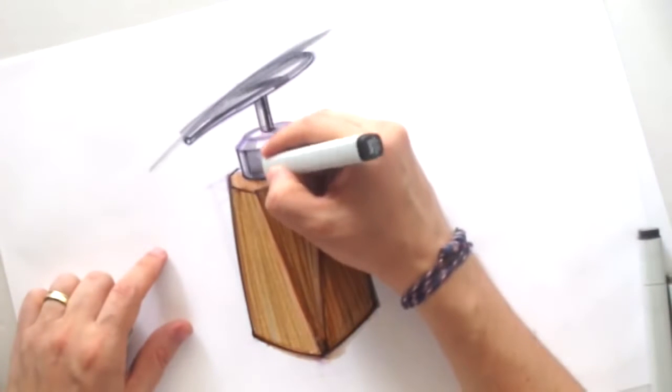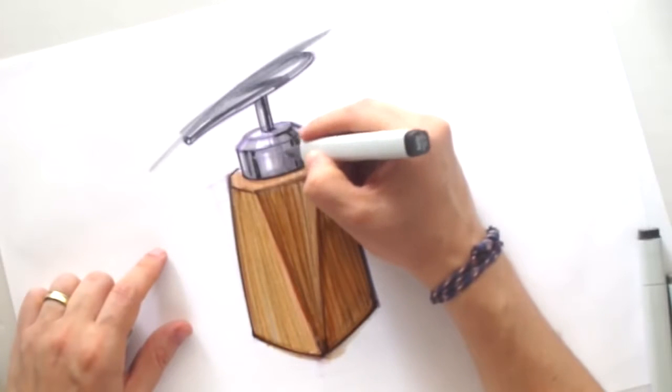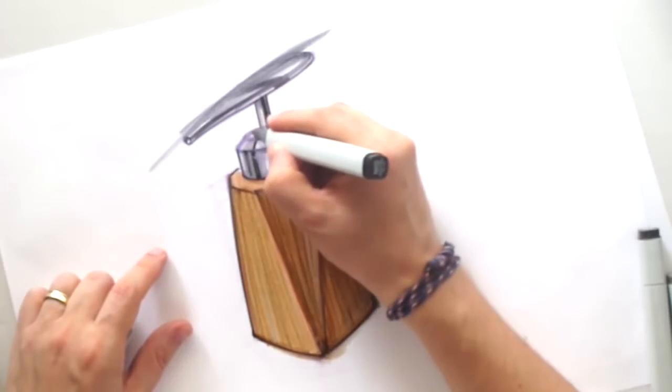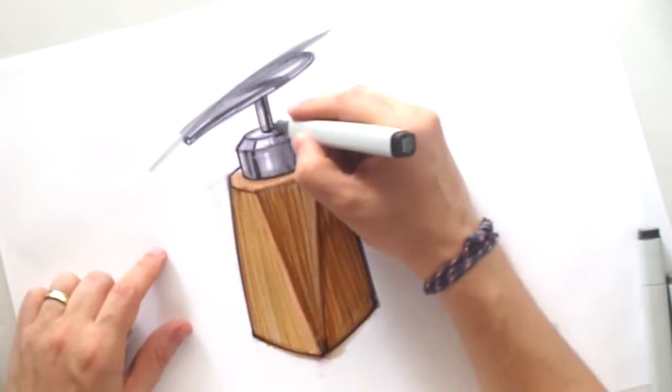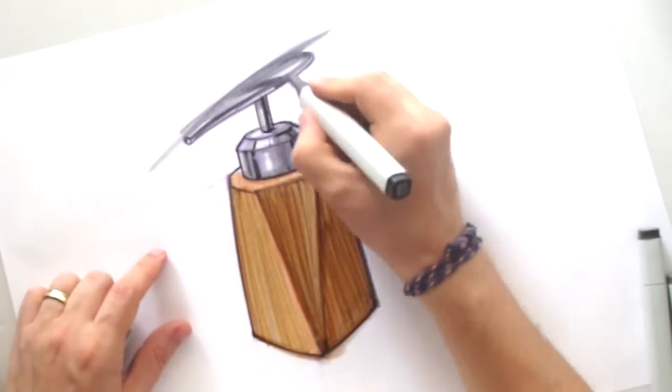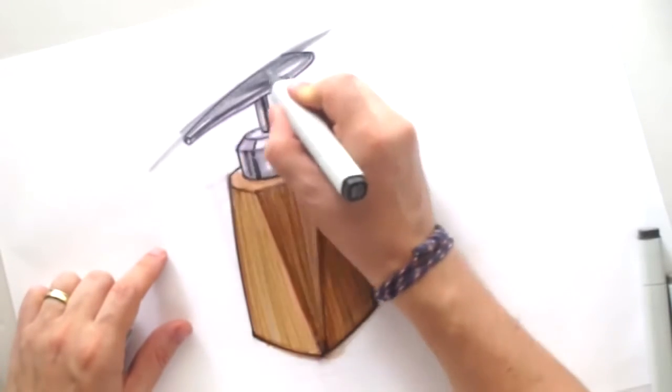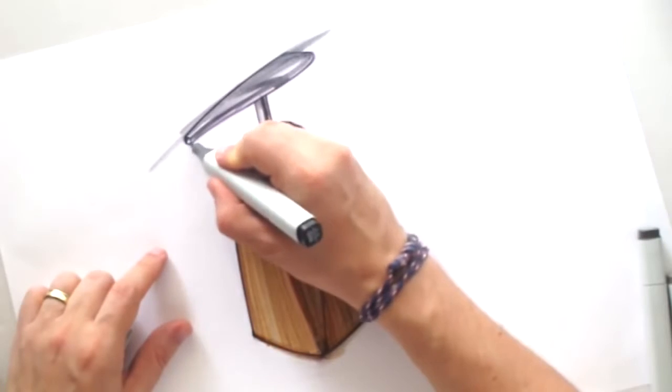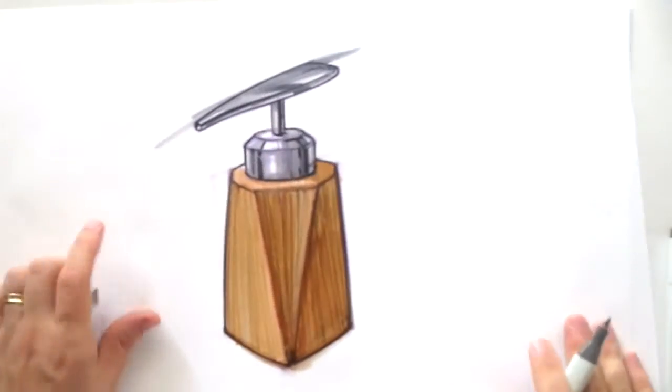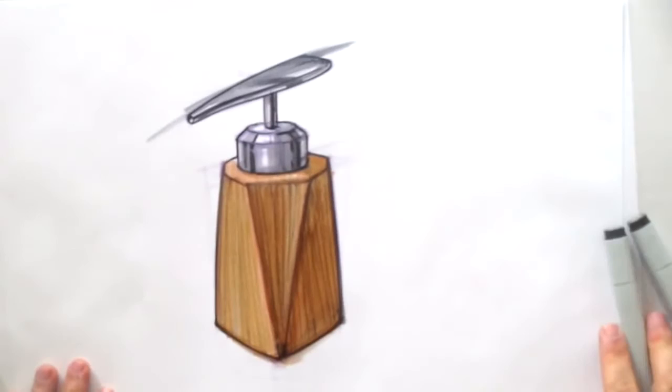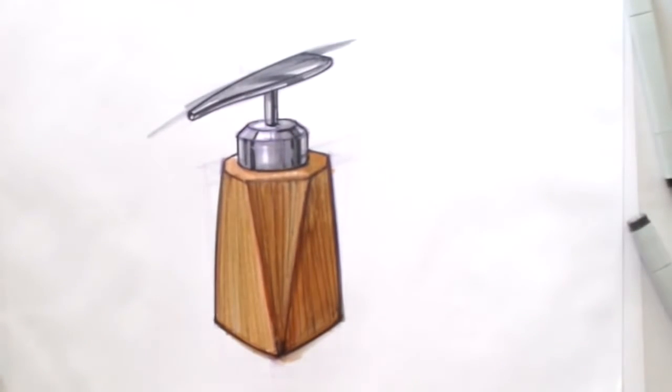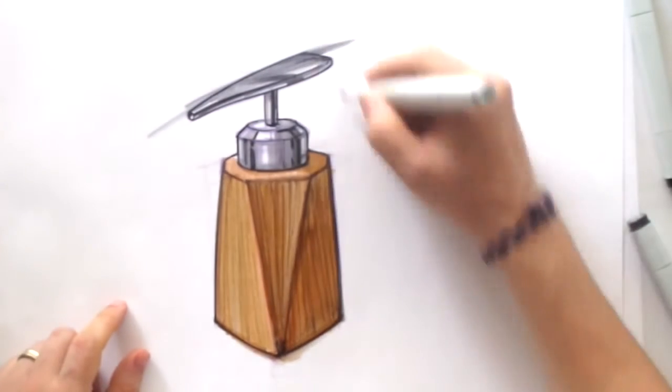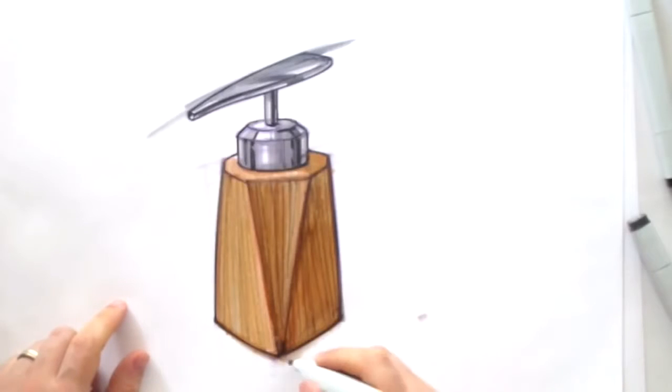By the way, for those renders, at this moment I'm using the Copic paper, A3 paper. It's quite good for blending, mixing the markers. But actually I don't care about what kind of material, what kind of paper to use.